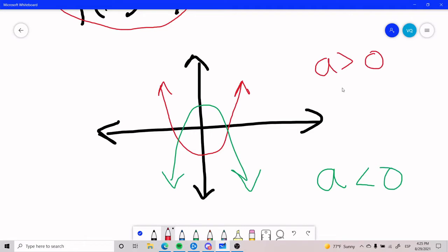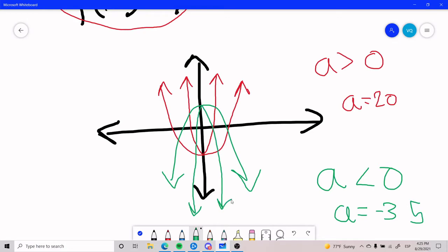If we have a really big a, for example, a equals 20, our slope or rate of change of the quadratic function is going to be more intensified. So, for example, an a of 20 would probably be something like this. And an a of negative 35 would be something like that. So that is the two things that a does: which way it faces and also how intense or how fast the quadratic function actually grows.